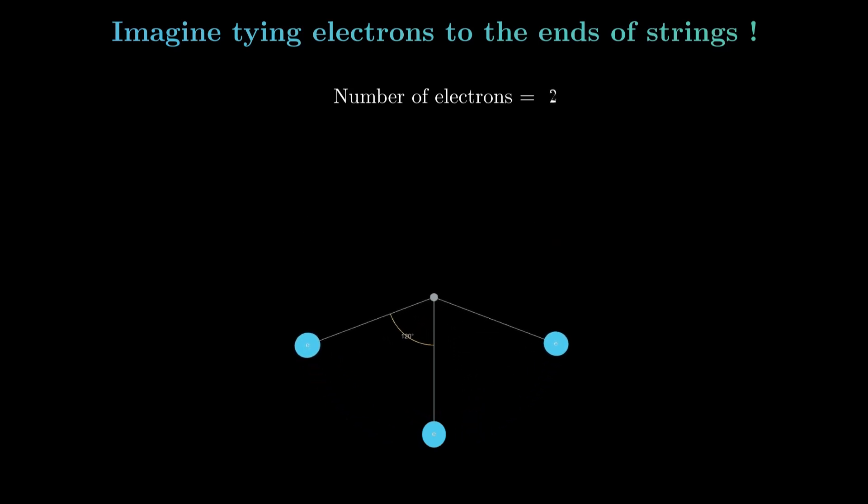Why do they settle into such precise symmetric shapes? The system wants to minimize repulsion, and this symmetric arrangement gives maximum separation. Even more remarkably, they ensure the net force on the system is zero - that is, the system is in equilibrium.